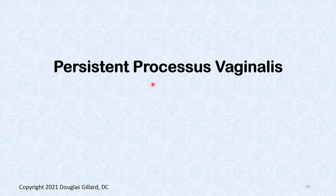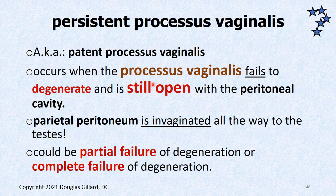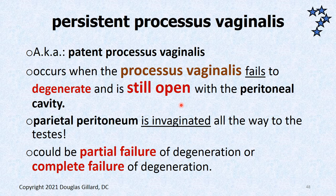About 25% of people have a persistent processus vaginalis. The processus vaginalis never scarred shut, so you have a communication between your peritoneal cavity and the cavity for the tunica vaginalis. That distal part of the processus vaginalis is what becomes the tunica vaginalis cavity that mostly — but not completely — surrounds the testes. The processus vaginalis can be completely open or only partially open.